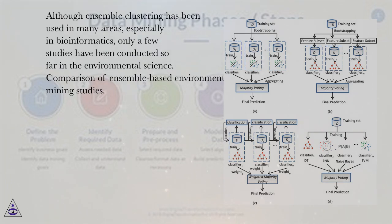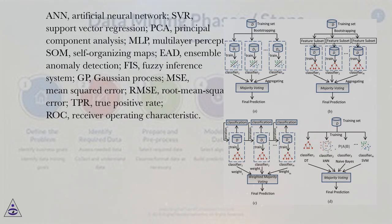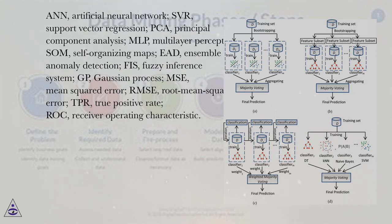Key abbreviations used in the comparison table: ANN (Artificial Neural Network), SVR (Support Vector Regression), PCA (Principal Component Analysis), MLP (Multilayer Perceptron), SOM (Self-Organizing Maps), EAD (Ensemble Anomaly Detection), FIS (Fuzzy Inference System), GP (Gaussian Process), MSE (Mean Squared Error), RMSE (Root Mean Square Error), TPR (True Positive Rate), and ROC (Receiver Operating Characteristic).